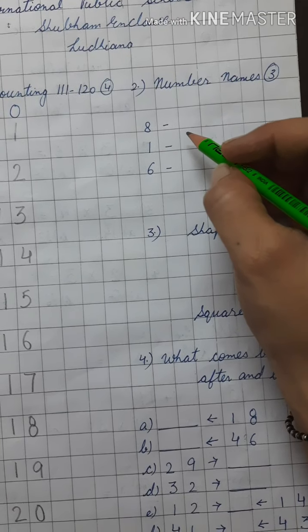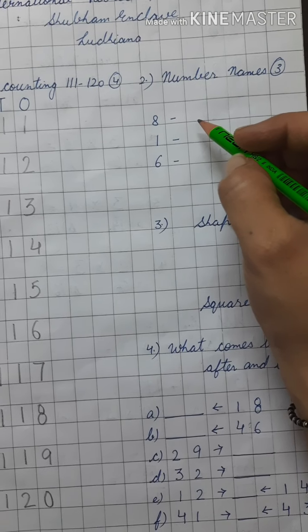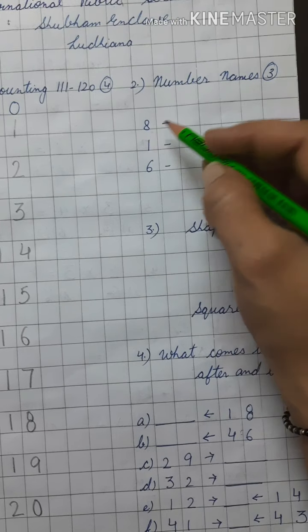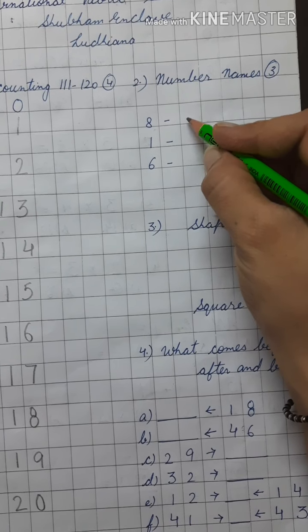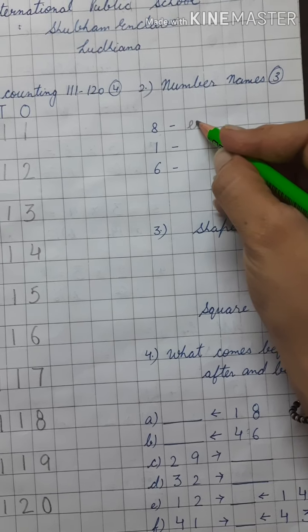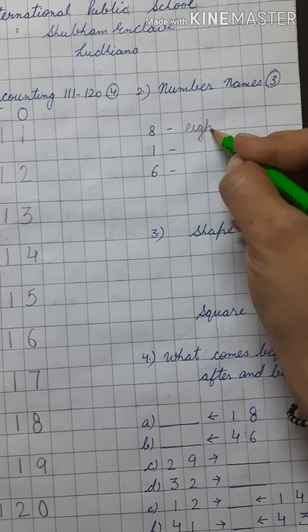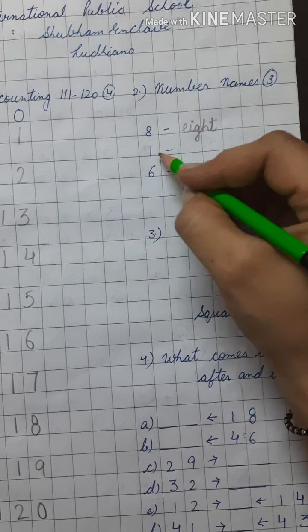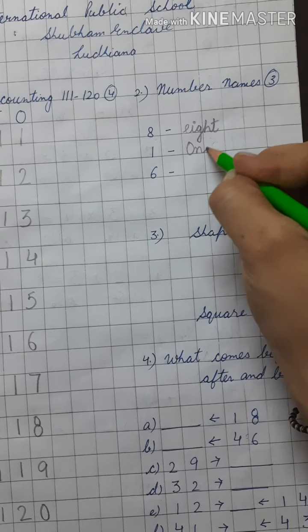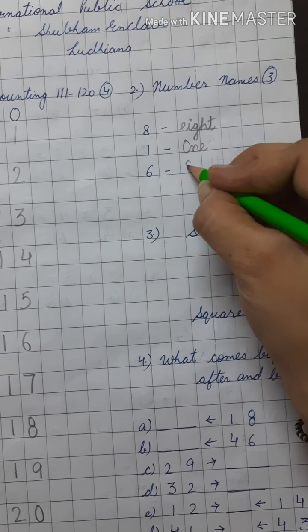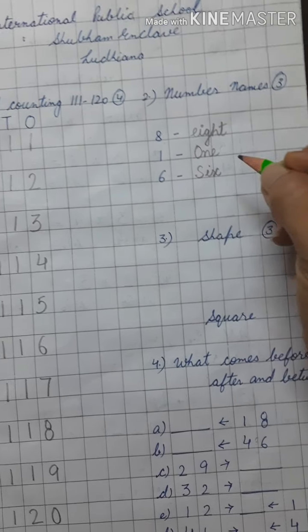Now, in next question, you have to attempt the number names. Which number is this? 8. So, I am going to write the spelling of 8 here. E-I-G-H-T, 8. 1, O-N-E, 1. 6, S-I-X, 6.